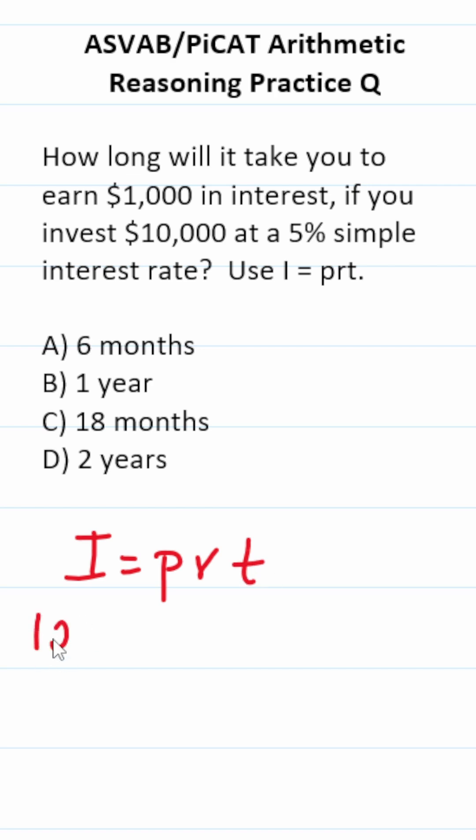Again, we want to earn $1,000 in interest, so that's going to be our I. Our principle is the amount we invest. We invest $10,000.